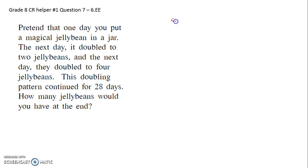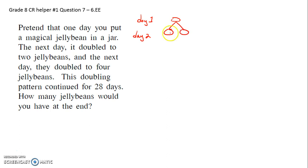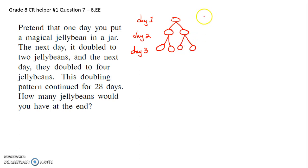So here's our first day — day one. There's our magical jelly bean. The next day, day two, that magical jelly bean has doubled. There's now two jelly beans. Day three, each of those magical jelly beans double, and now we're up to four jelly beans.